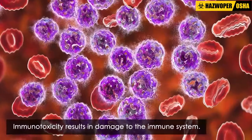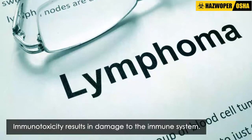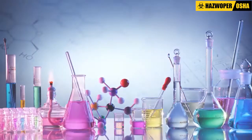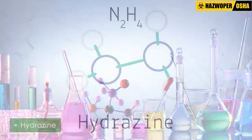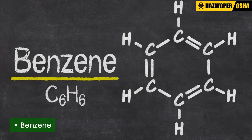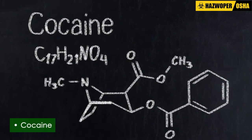Hematotoxicity results in uncontrolled growth of cells or antibodies, as is the case with leukemia and lymphoma. Examples of these chemicals include hydrazine, benzene, and benzene derivatives.